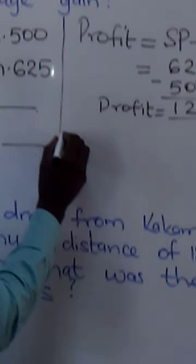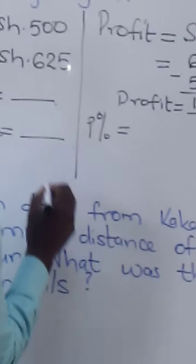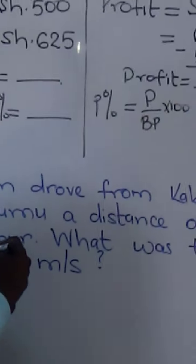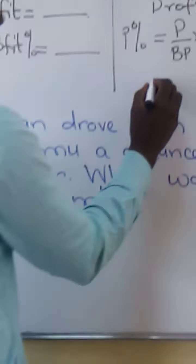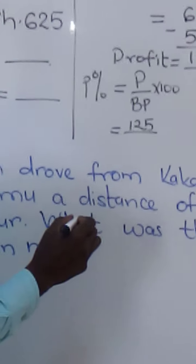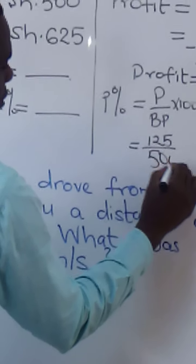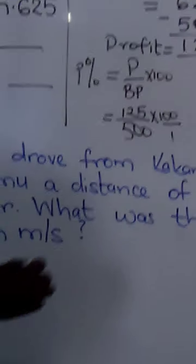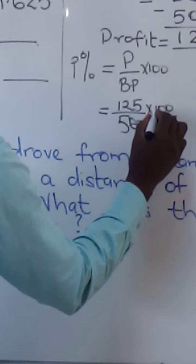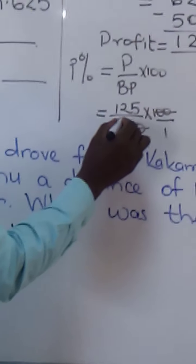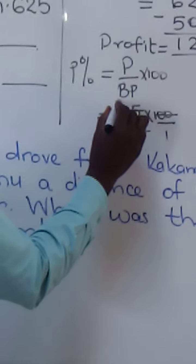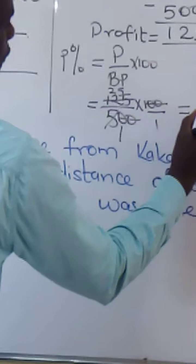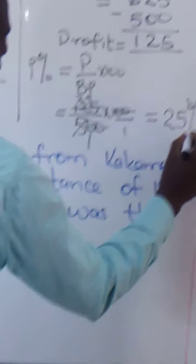Now we want to know the percentage profit. Percentage profit equals the profit over the buying price times 100. The profit here is 125 shillings, and the buying price is 500 shillings times 100, representing percentage — always put it over 1 to make it a fraction. The two zeros cancel the two zeros, then 125 divided by 5 is 25. So the percentage profit is 25%. I hope you have understood that.